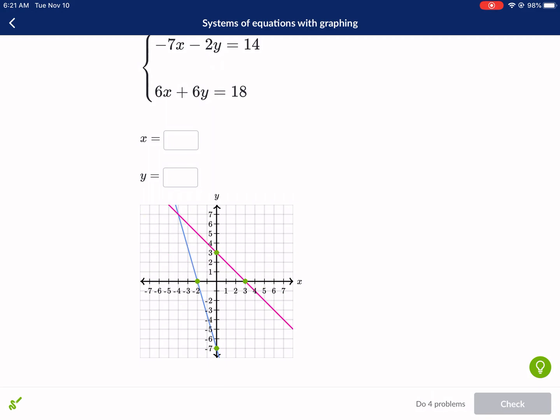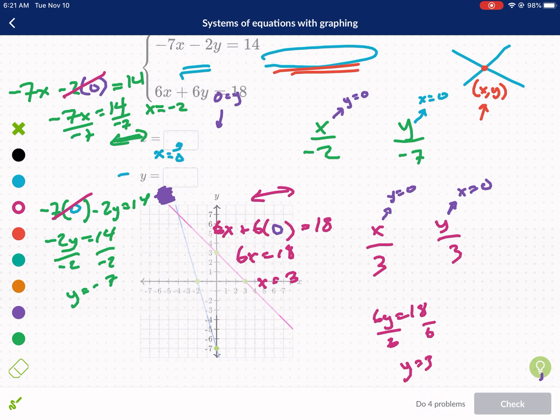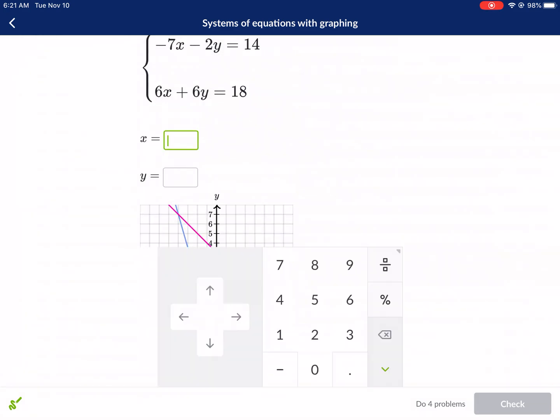Now we're not done. The whole point was to find the point of intersection. So the point of intersection is where they cross and you can see they cross right there. The pink and blue cross right there. Where's that point? Negative 4 comma 7.